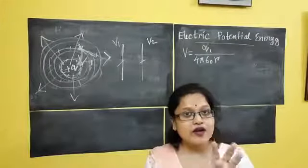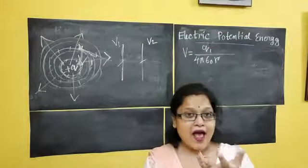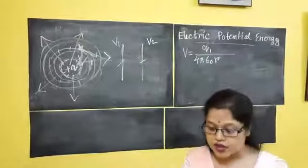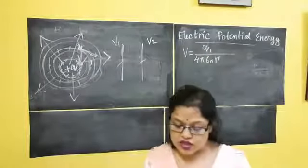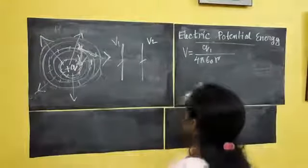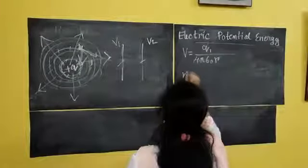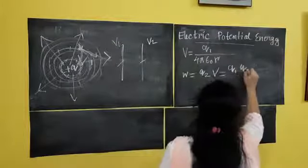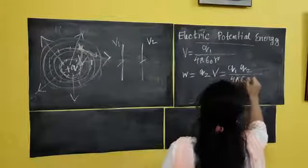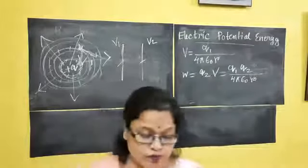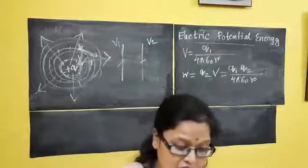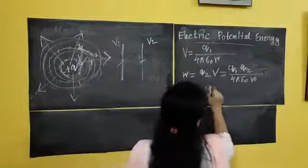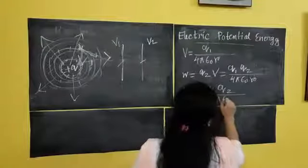Now I have another charge Q2. Already there is an electric field due to Q1, so when I bring Q2, the work done is Q2·V = Q1·Q2 / (4πε0·R), since the distance hasn't changed. Denoting this potential energy as U, we get U = Q1·Q2 / (4πε0·R).